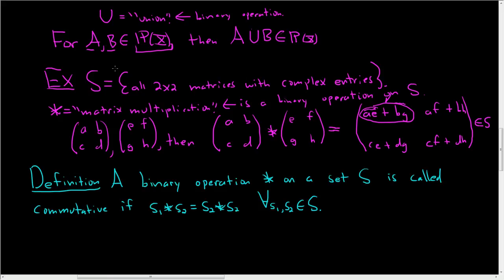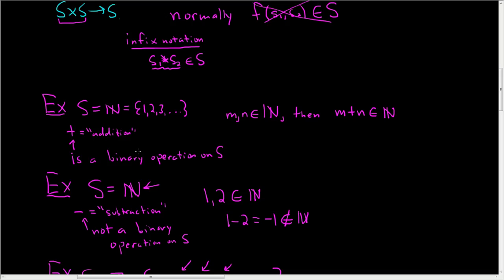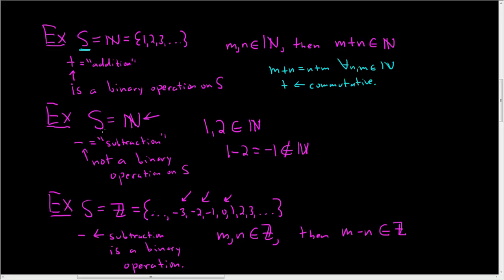Let's go back and look at the binary operations we already examined to see which ones are commutative. In our first example, we had addition on the natural numbers. Certainly m + n is the same as n + m for all natural numbers, so addition is a commutative binary operation. In the next example, subtraction was not even a binary operation on the natural numbers, so we can't talk about whether it's commutative.